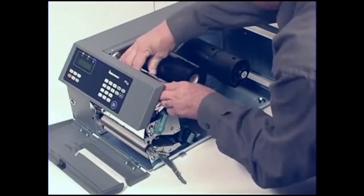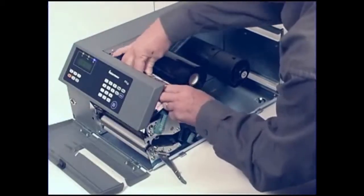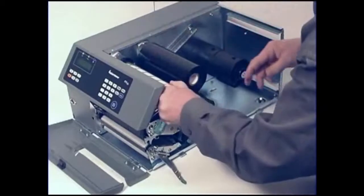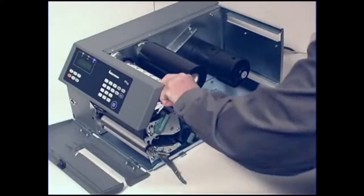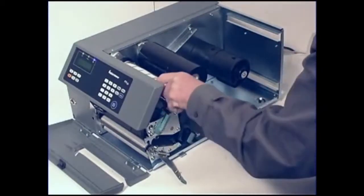Turn the printhead lift lever counter or anti-clockwise to raise the printhead. Wind the ribbon until the entire transparent leader has passed the printhead and the ribbon becomes tight.